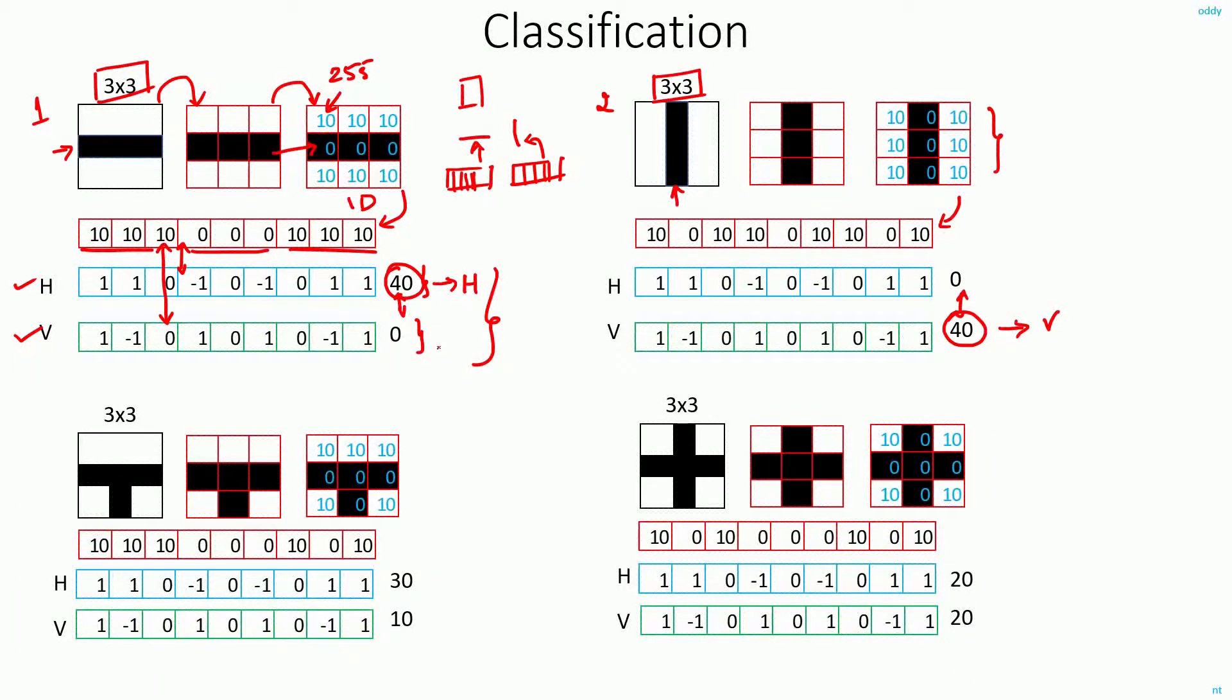So let me slightly change the problem. Now what I will do is, in the third case, this is how the image looks. It has a big horizontal line but just one small vertical line. If I do the computations for this image, what I will get is I'll get a value of 30 and 10. Here again, the higher value of these two is 30, and that's how I conclude that this image has a horizontal line.